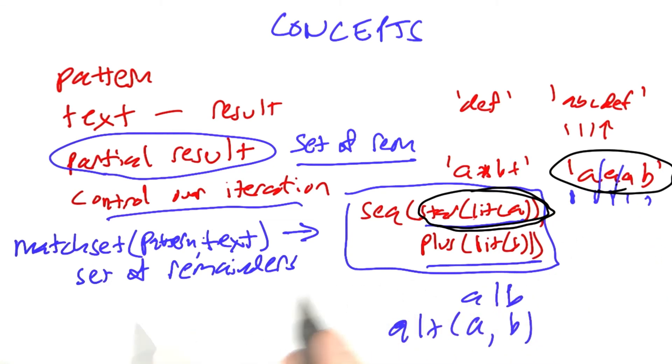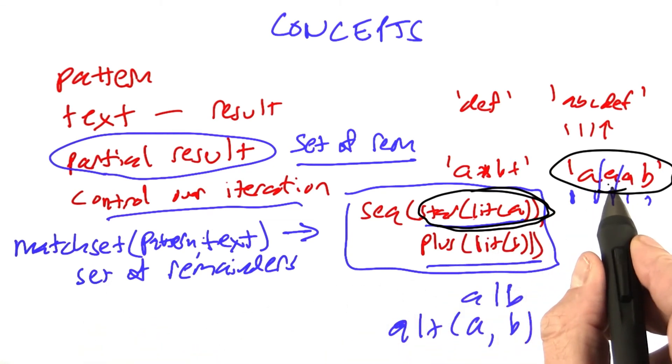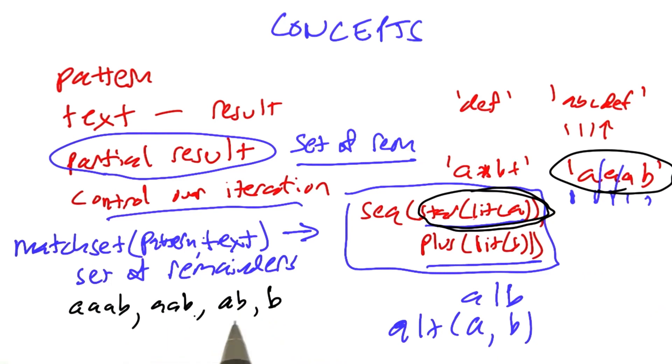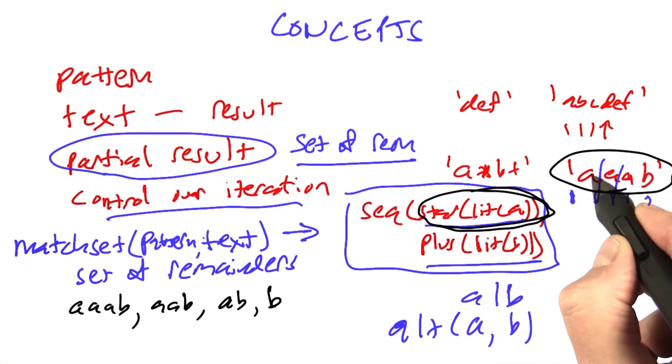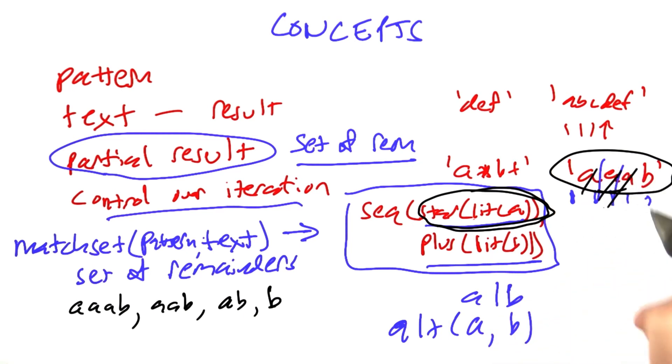The remainder would be a set consisting of three a's and a b, two a's and a b, one a and a b, or just b. In other words, star of literal a could have consumed 0, 1, 2, or 3 a's, and that's the remainder that's left over. And so the result will be this set.